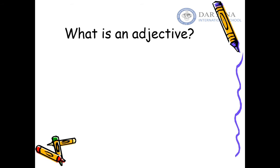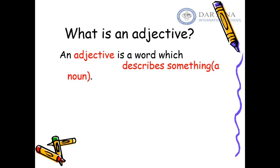Now we are going to continue with adjectives. What is an adjective? An adjective is a word which describes something — a place, thing, idea, or person — so it always describes a noun. An adjective is the word that describes a certain noun.